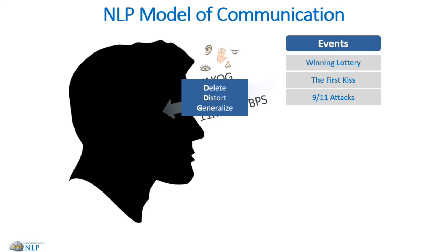Generalization is where we draw conclusions about someone or something based upon previous experience. Generalizing can actually help us to learn by taking information we have and drawing conclusions about its meaning. For example, if you've ever burnt your hand on a hot plate once, you don't need to touch another hot plate to know it will also burn. The unfortunate side is this can also cause us to form limiting beliefs about ourselves and our capabilities based on previous failure, which can hold us back from doing that thing again for the rest of our life.